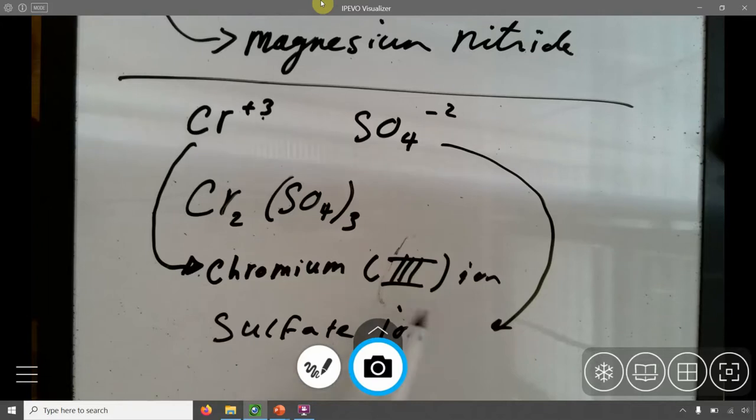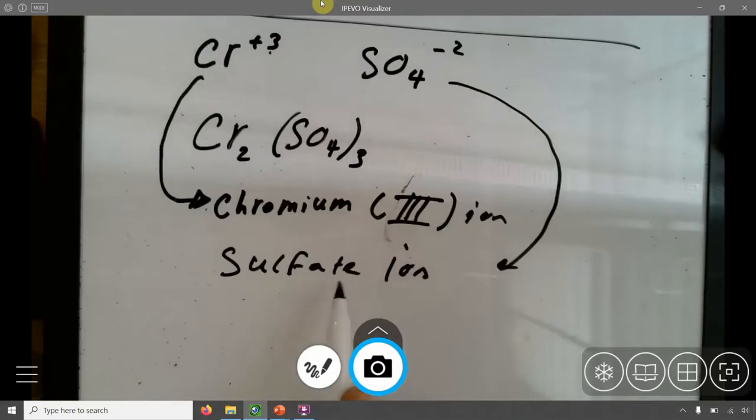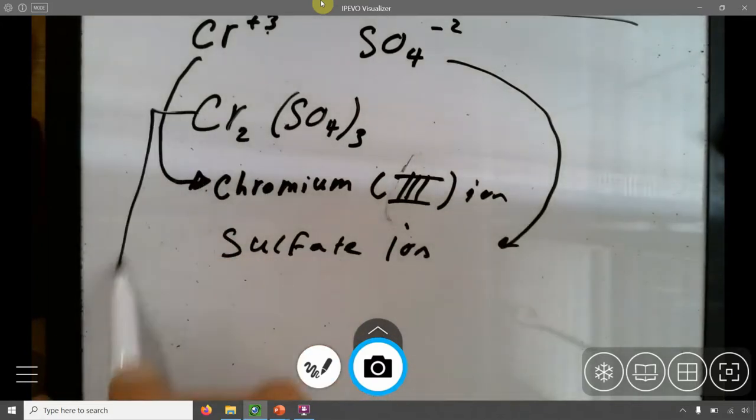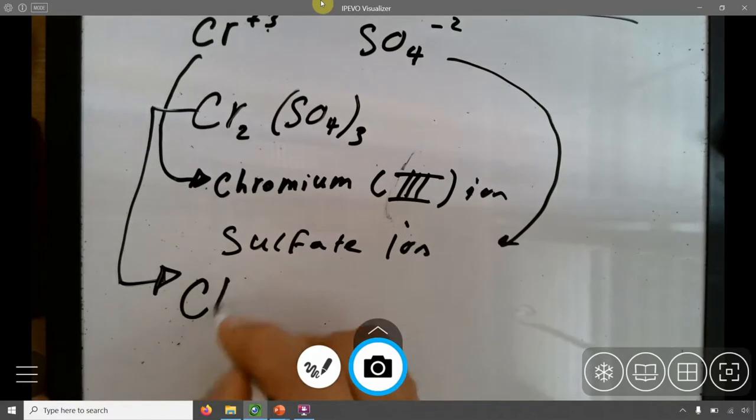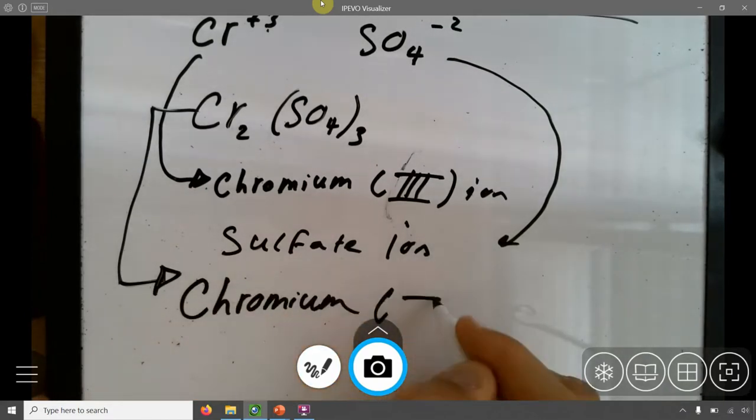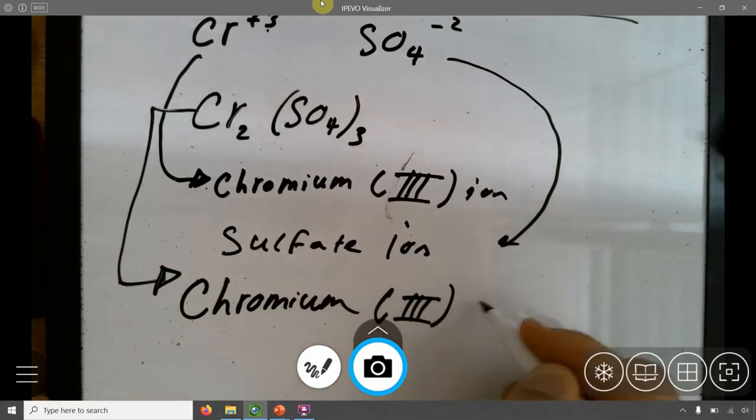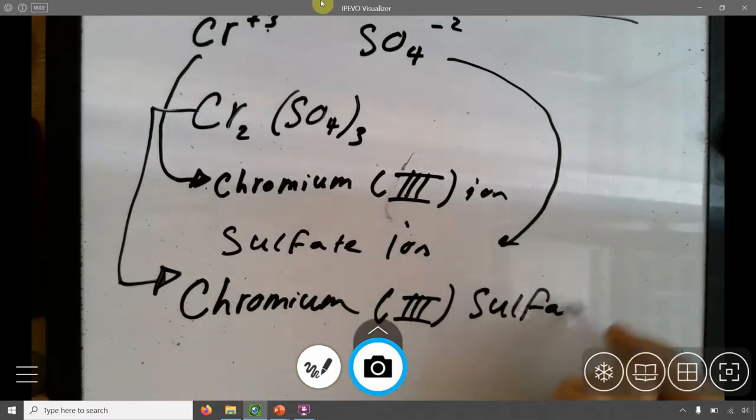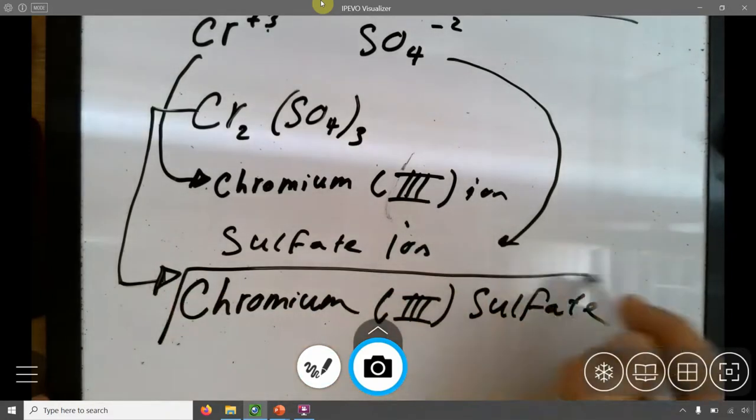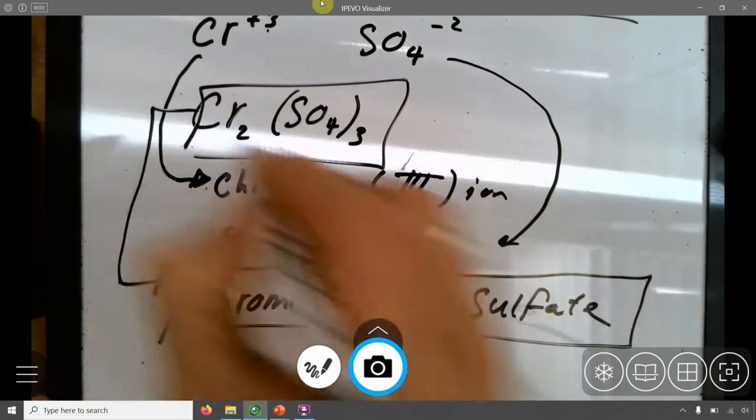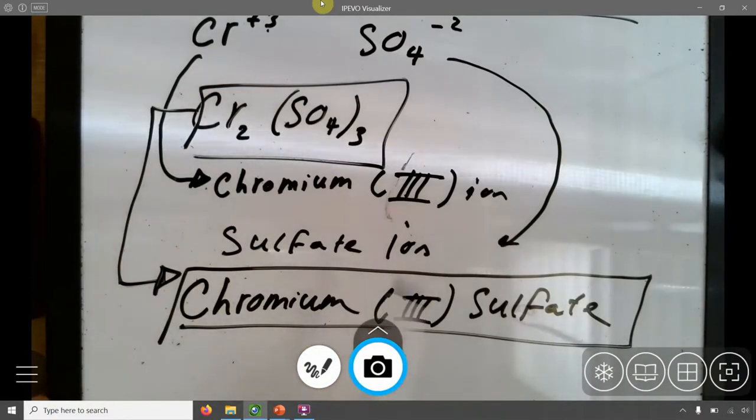Chromium three ion, sulfate ion. To get the name of the entire thing, then, I smoosh them together, and I drop the words ions. And it's going to be chromium three sulfate. That's it. That's the name for this thing. Chromium sulfate.